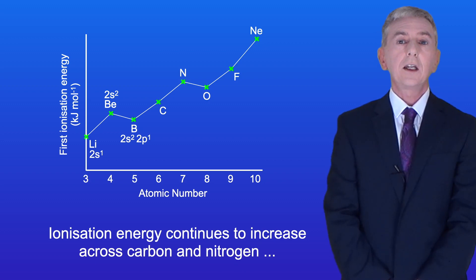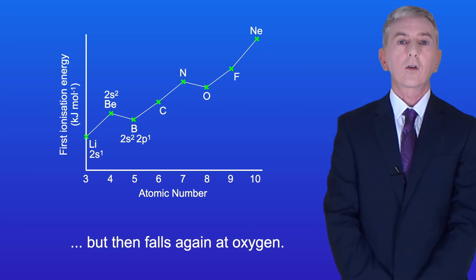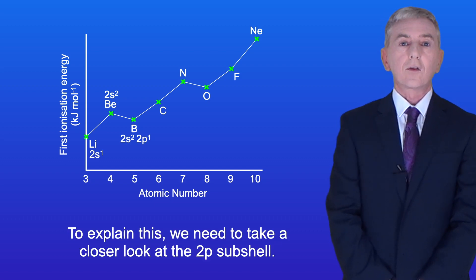Ionization energy continues to increase across carbon and nitrogen but then falls again at oxygen. To explain this we need to take a closer look at the 2p subshell.